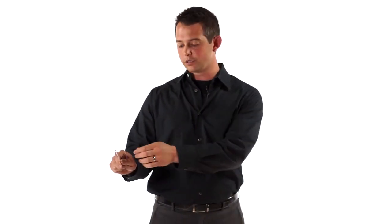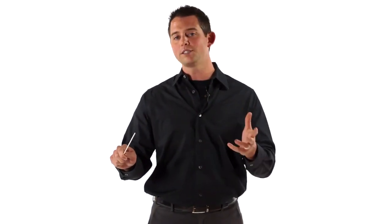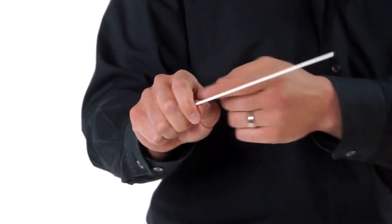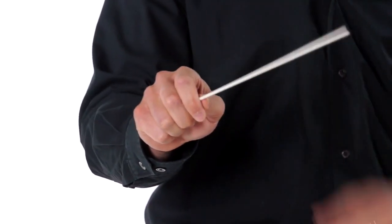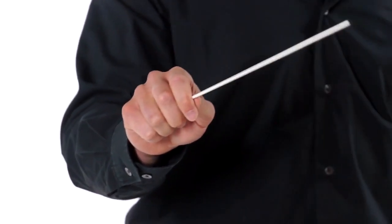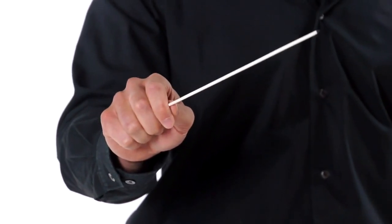You'll also notice that there's a slight gap here between the thumb and the index finger. It's not closed. Closing this down creates tension, and as we've already talked about, tension is something we want to get out of our conducting. So relax that so that there's space here. Again, still touching between the thumb and the index finger creating that fulcrum on the baton tip here.